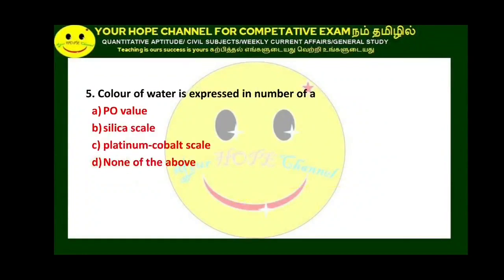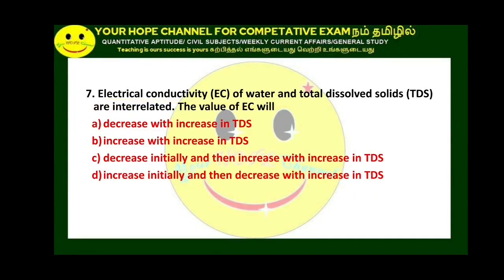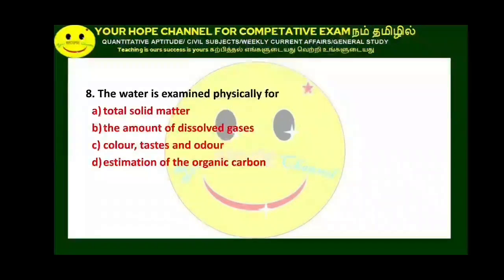The colour of water is expressed on the platinum cobalt scale. The permissible colour of domestic water on the platinum cobalt scale — option 20. For potable water, 5 is the acceptable limit and 15 is the permissible limit. Electrical conductivity (EC) and total dissolved solids (TDS) are interrelated: when EC value increases, TDS value increases. The ratio of TDS to EC is equal to 0.68.